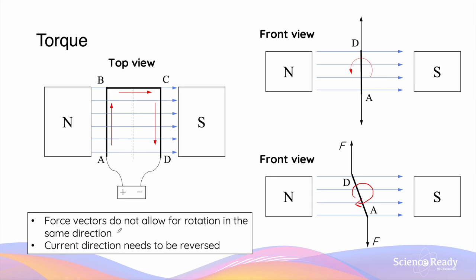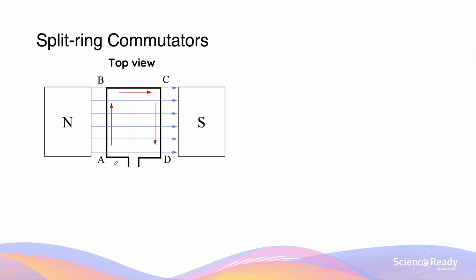If we want to continue rotation in an anti-clockwise direction, we need to make sure the force vectors point in the opposite direction. To do this, we need to reverse the current direction — making the current go from D to C and from B to A. The direction of the motor effect force depends on the direction of the current. So the question is: how do we reverse this current?